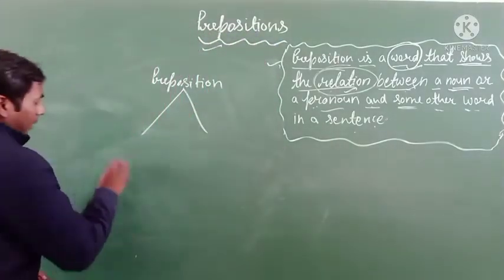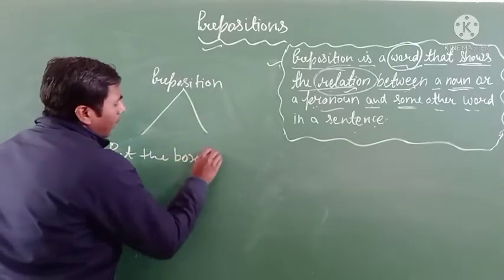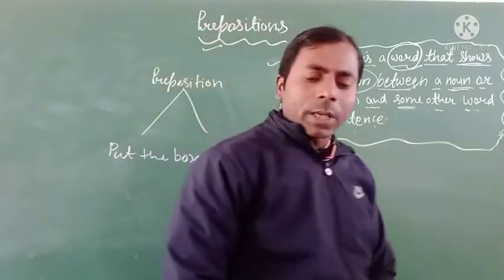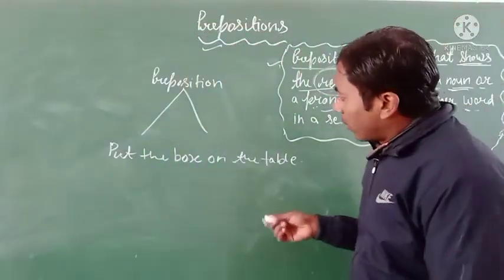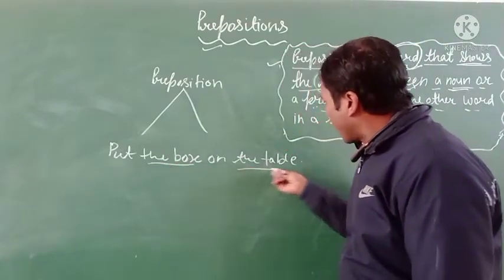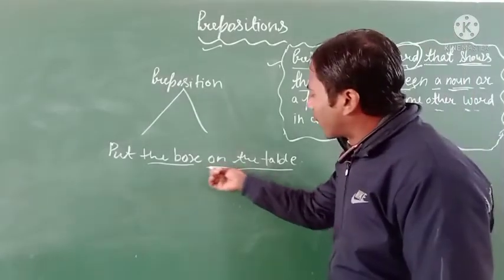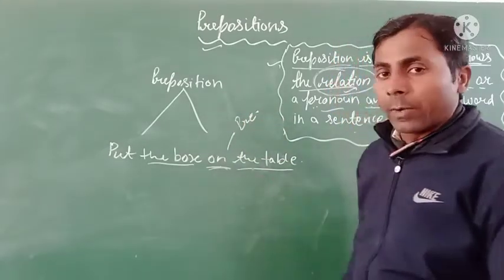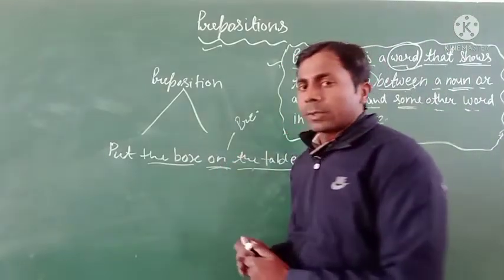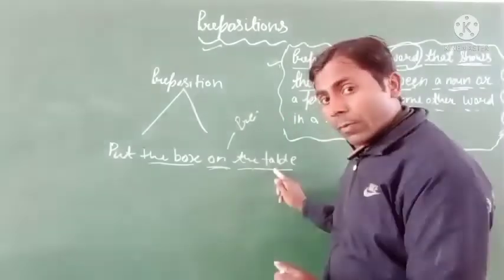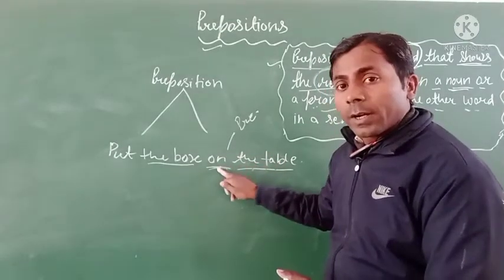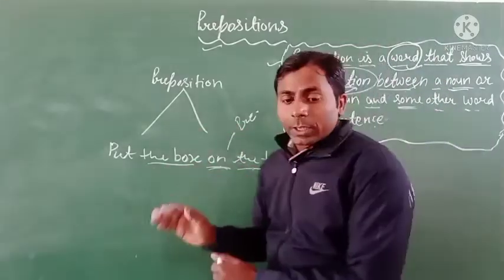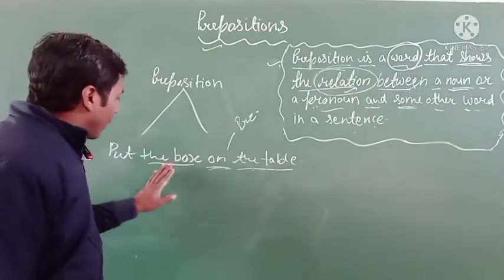Example: put the box on the table. You can see here the words box and table — both are noun words. And the word 'on' is a preposition word. It is used before the noun; 'the table' is a noun word. And this preposition word is used before the noun word, and its work is to show the relation between the nouns.